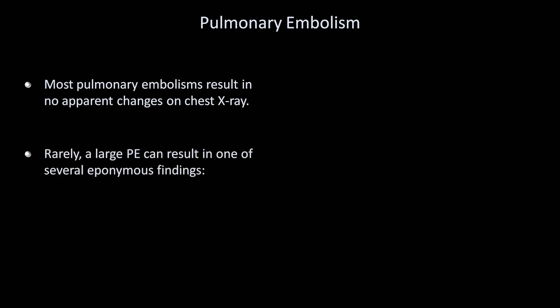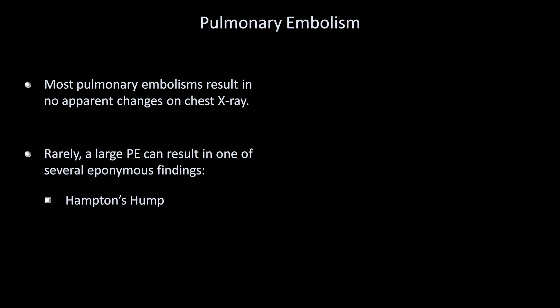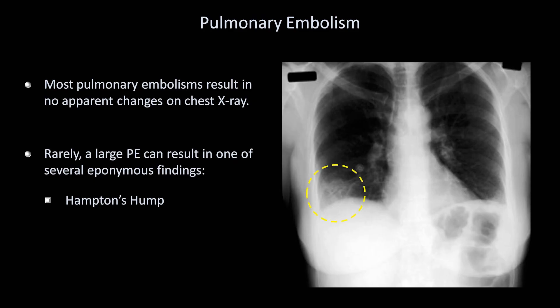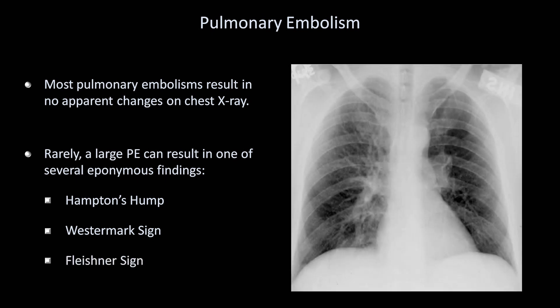Most pulmonary emboli result in no apparent changes on chest x-ray. Rarely, a large PE can result in several eponymous findings. Hampton's hump is a wedge or dome-shaped, pleural-based opacity due to lung infarction that may take months to resolve and frequently leaves scarring. Westermark's sign is focal oligemia — a focal reduction in lung markings — due to lack of blood flow distal to an embolus and redistribution of blood to adjacent areas. Fleischner's sign is a prominent central pulmonary artery caused by distention of the vessel. In one case shown, both Fleischner's sign and Westermark's sign are visible.